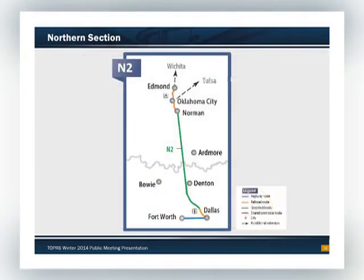This is another route we looked at — a Greenfield, meaning a new alignment, roughly parallel to I-35 down to Dallas. Then it would use a route suggested by the Metroplex area providing a connection between Dallas and Fort Worth running down the median of I-35 for a high-speed connection.